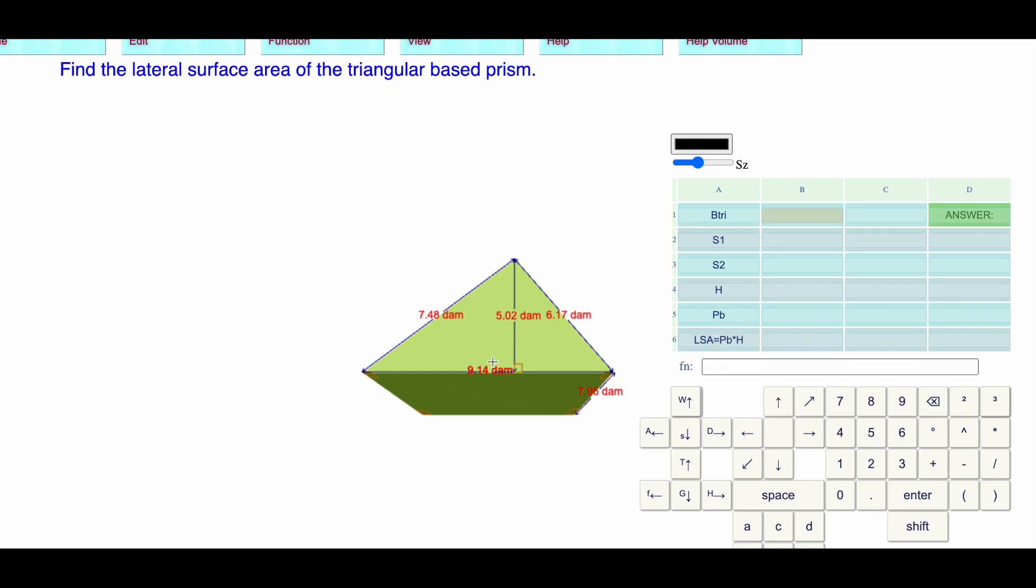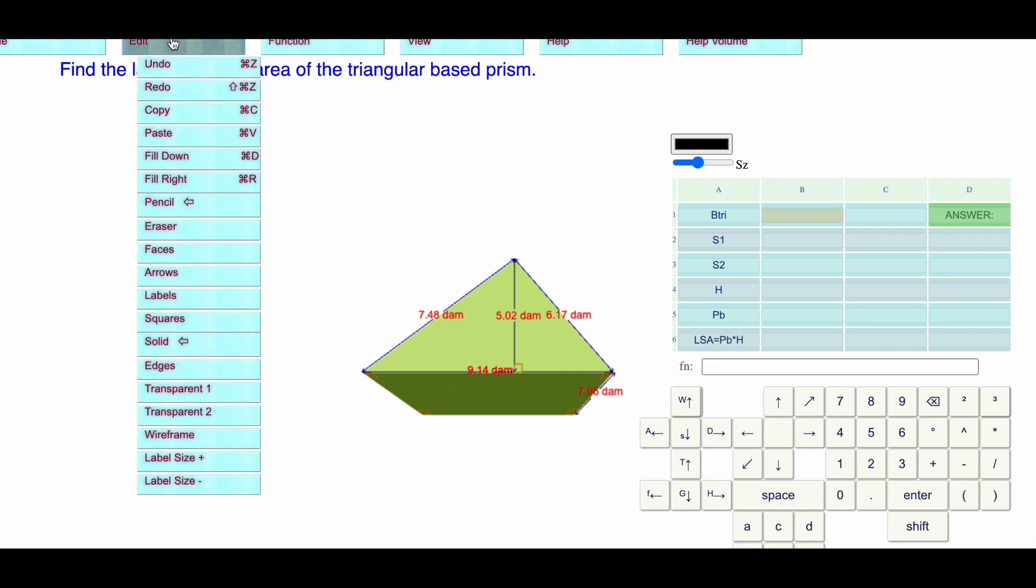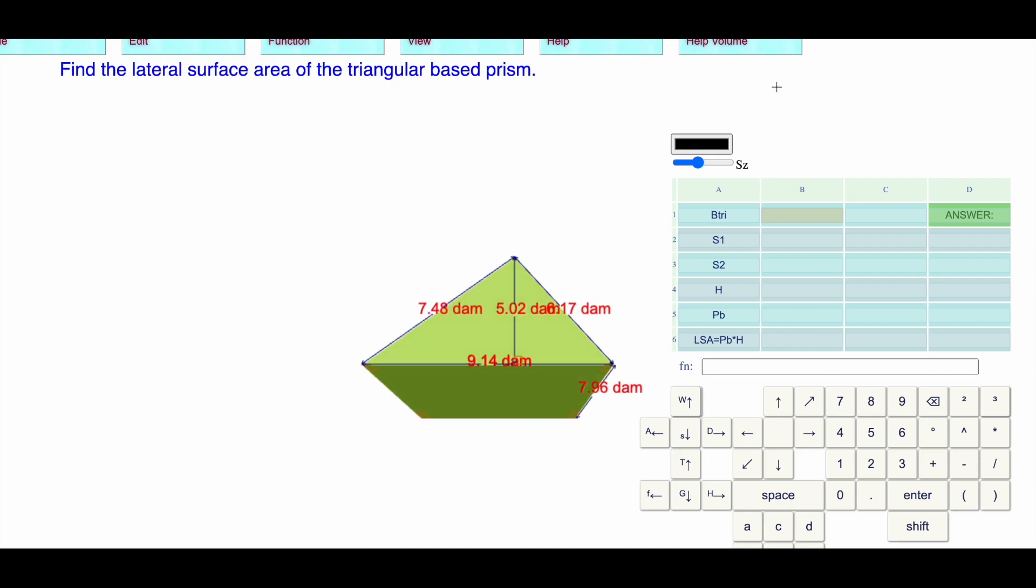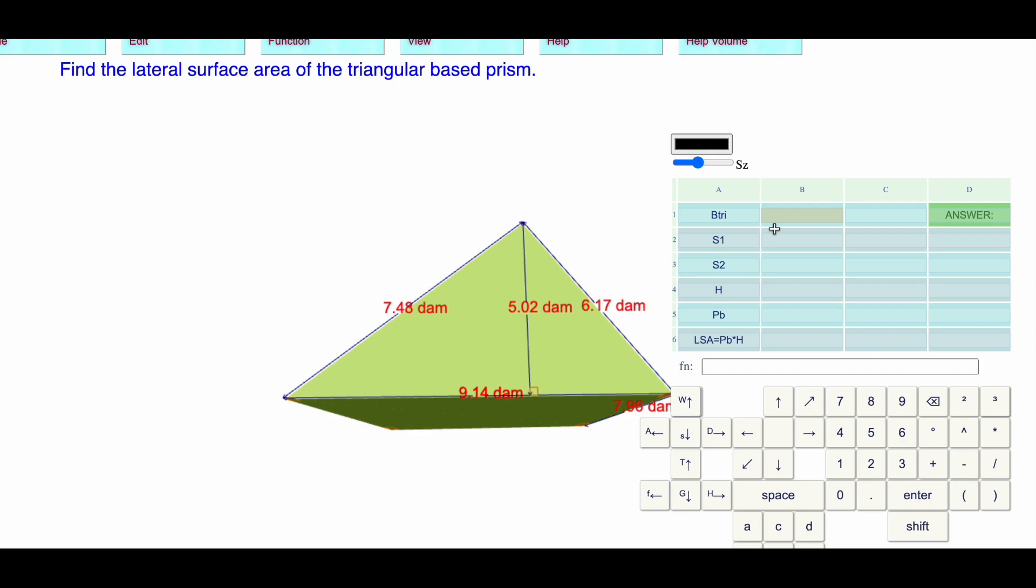The base of the triangle is 9.14, and if you can't read that, you can always just make your labels bigger and move stuff around so you can see a little bit better. Base of the triangle 9.14 decameters, side one 7.48, you could call the 6.17 side one it doesn't matter, 6.17 side two.